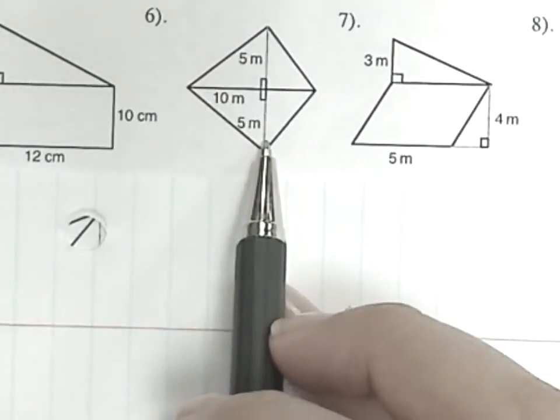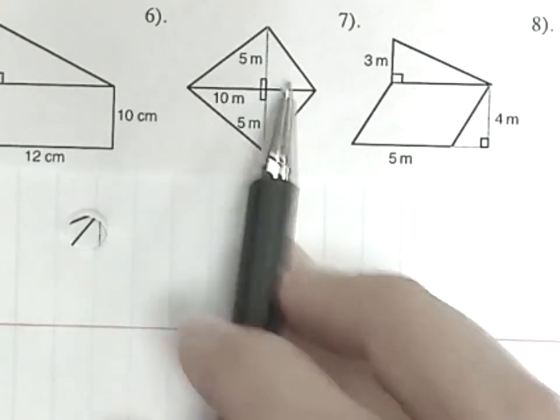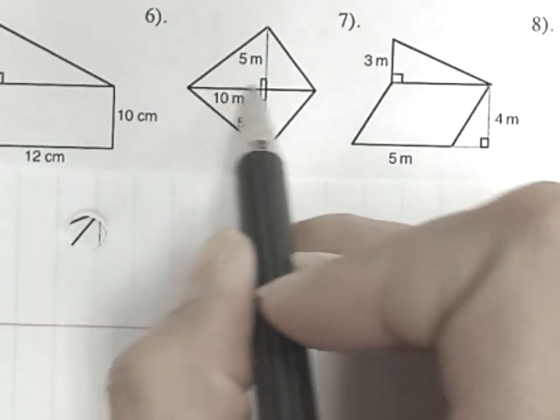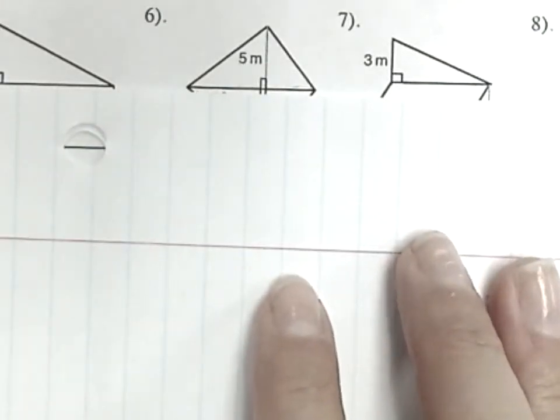Number six. It's a polygon. It's got four sides but it cuts through here. Two triangles.